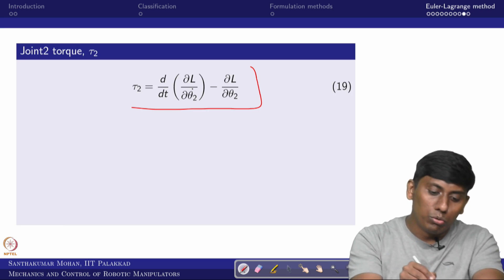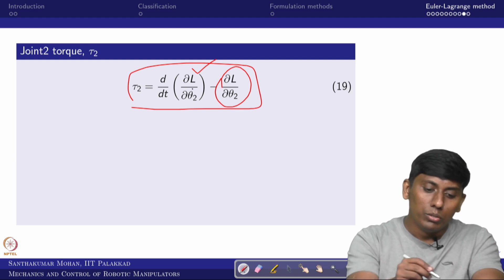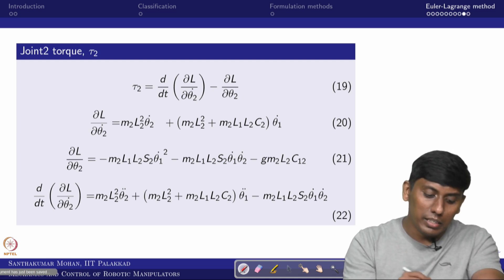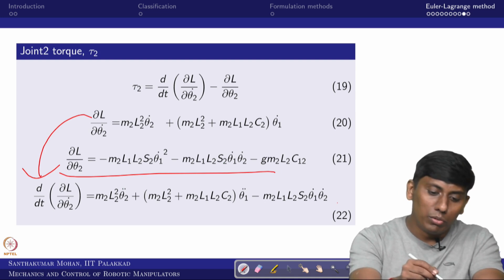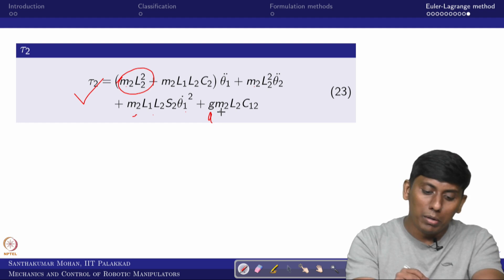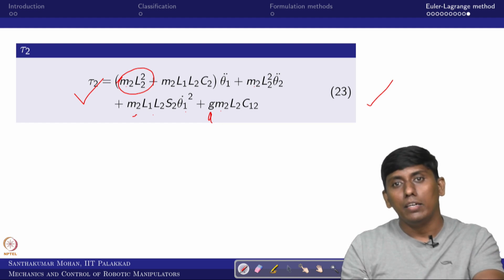Similarly, for tau_2: compute ∂L/∂θ̇_2 and ∂L/∂θ_2, take the time derivative, and subtract. Again, dimensional checks confirm: coefficients of θ̈ terms carry 1 mass and 2 distances; coefficients of velocity-squared or velocity-product terms carry the same; gravity terms carry 1 mass and 1 distance. This is how tau_2 is derived for the 2-link manipulator using the Lagrangian-Euler method.